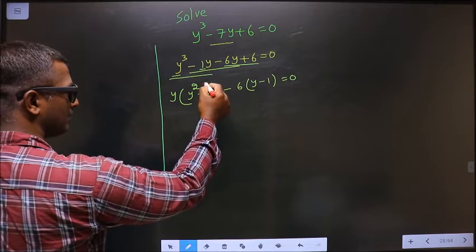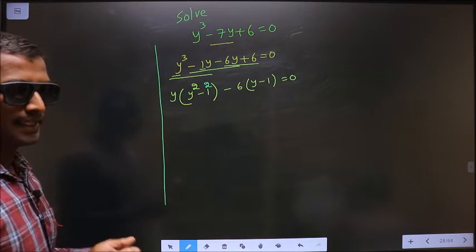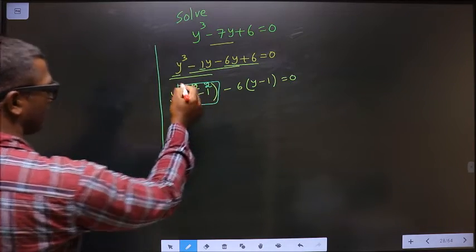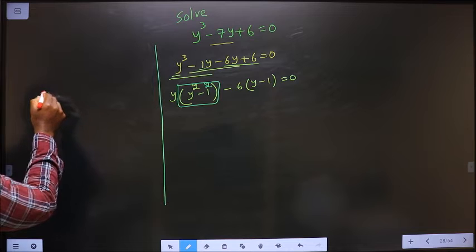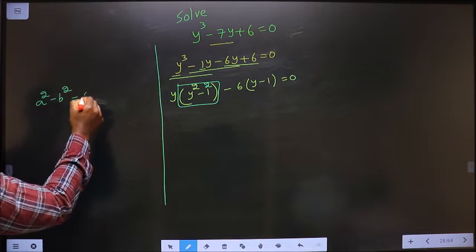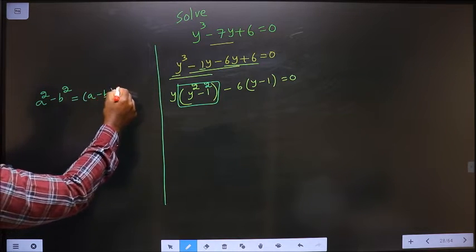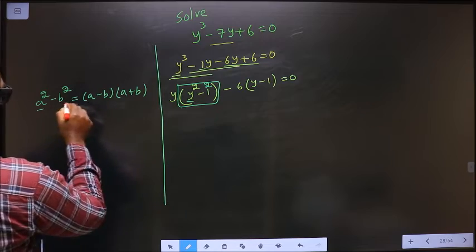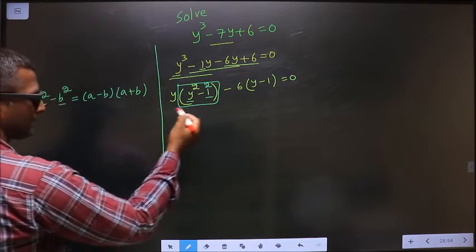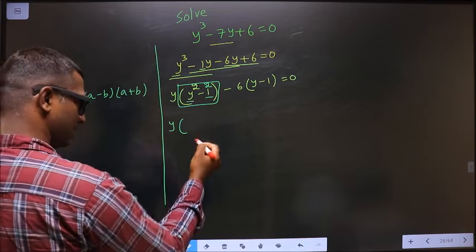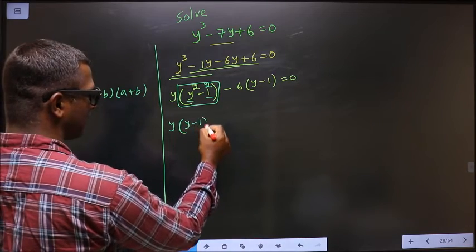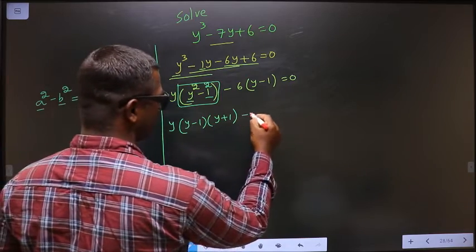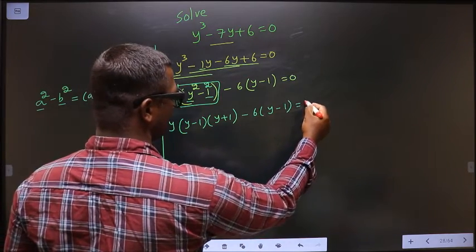On 1, I can put a square — it is not going to make any change. Why did I put a square? So that I can make use of the formula a squared minus b squared, which is a minus b times a plus b. In place of a you have y, in place of b it is 1. So this simplifies to y minus 1 and y plus 1.